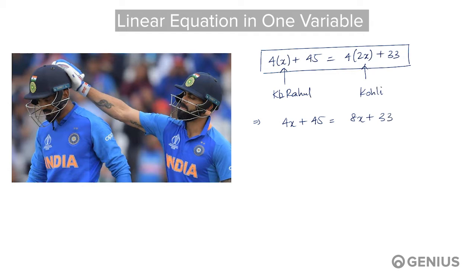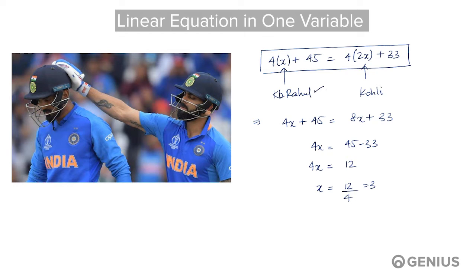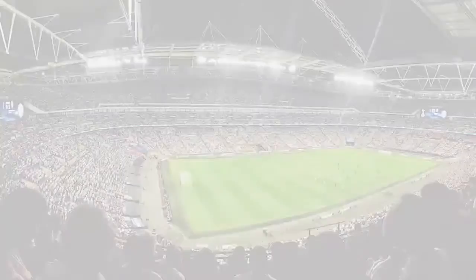Rearranging, we get 4x = 45 minus 33, which is 12. So x = 12 upon 4, which is 3. We can say that KL Rahul hit 3 fours and Kohli hit 6 fours during the match.